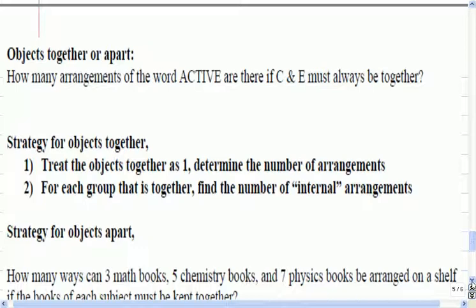How many arrangements of the word ACTIVE are there if C and E must be together? Okay. I don't know. I haven't, can't remember. But let's think about how many objects are there? Five. No, six. Is there six objects here? Or are there six objects? Five. Because C and E is one object. Yeah. That's a good way to think of this problem, right? C and E must stay together. So there aren't really six objects anymore. There's now actually five.